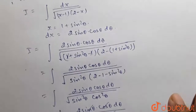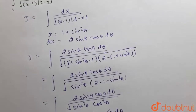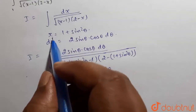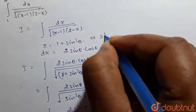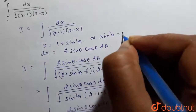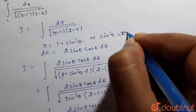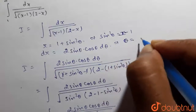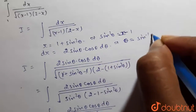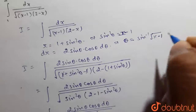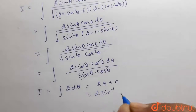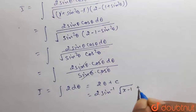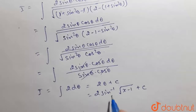Now, x is equal to 1 plus sin square theta. So, from here we get sin square theta equals to x minus 1, or theta will be equal to sin inverse of under root (x minus 1). So, here it will be 2 sin inverse of under root (x minus 1) plus C. So, the value of I is 2 sin inverse under root (x minus 1) plus C.